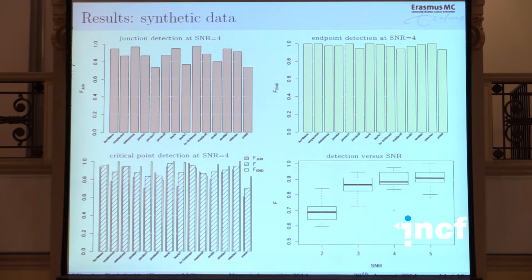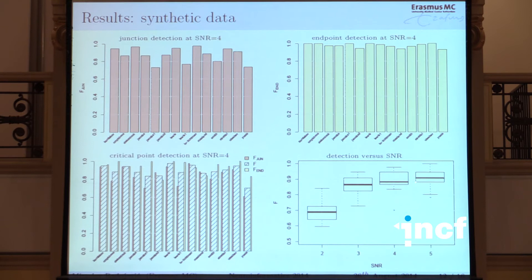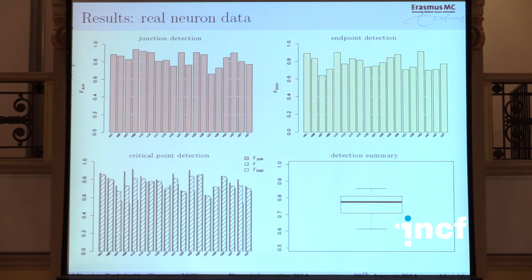Looking at the results: for junction detection you can see the detection scores per image, and here we have endpoint detection and the combined score. This was all for a signal-to-noise ratio of four, which is a high signal-to-noise ratio. Looking at performance across signal-to-noise ratios, it's substantially higher for signal-to-noise ratio three, and we can roughly expect around 90 percent performance.